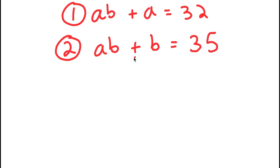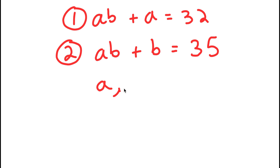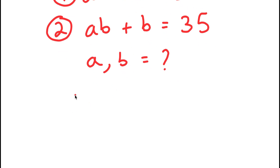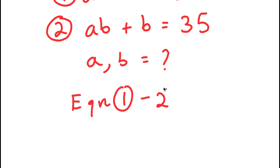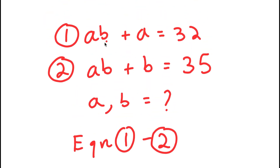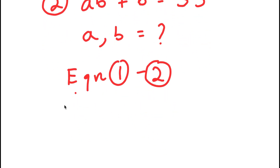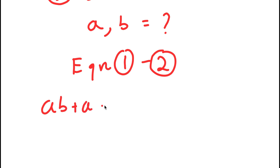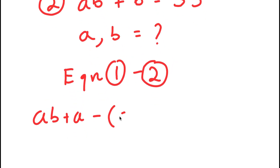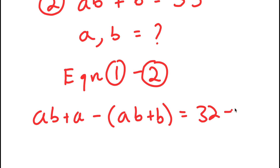To solve the system of equations, I have to find the values of A and B. To start out, I'm going to subtract equation two from equation one. Equation one is AB plus A equals 32, so I have AB plus A minus AB plus B, which is equal to 32 minus 35.